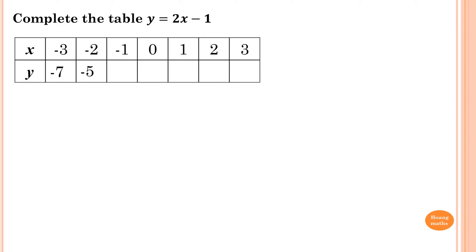When x is 0, y equals 2 lots of 0, minus 1. 2 times 0 is 0, and 0 minus 1 is minus 1. Same thing applies — just to save time, I'll quickly give you the answer. So 2 times 1 is 2, minus 1 is 1.